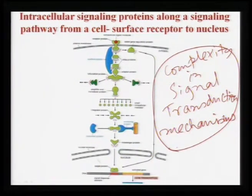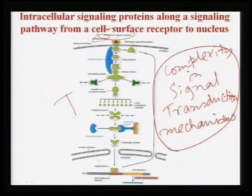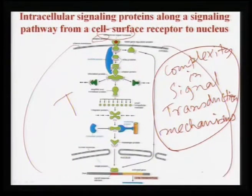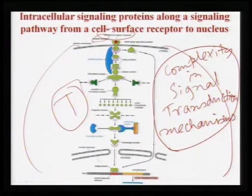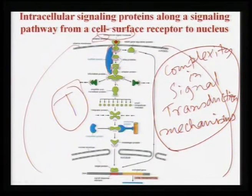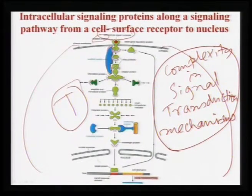The complexity in the signal transduction mechanism: you have extracellular signal molecules — the red balls — which come and interact with the receptor protein on the target cell. Once this signal comes, it activates a large number of protein molecules in the pathway. These protein molecules are part of a large scaffold protein and are called relay proteins. Like relay races on the ground — you transfer the baton to your friend who runs, then transfers it to another person — similarly, different protein molecules inside the cell can act as relay proteins, transferring signals or communication to other proteins.